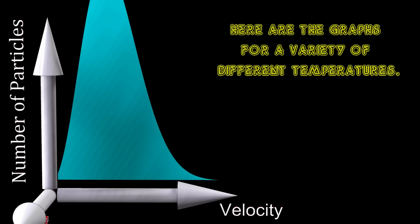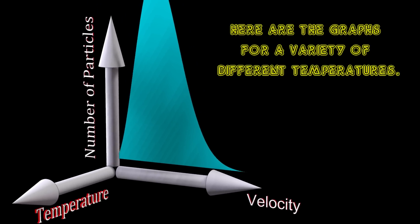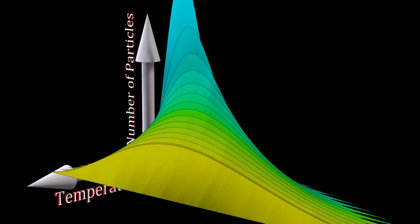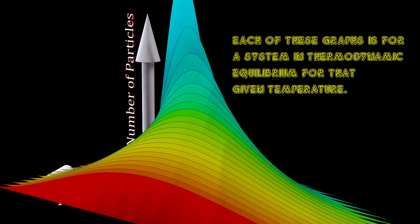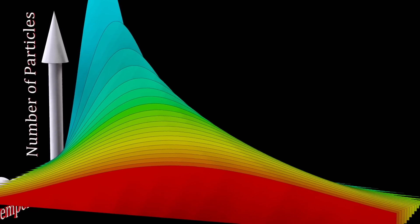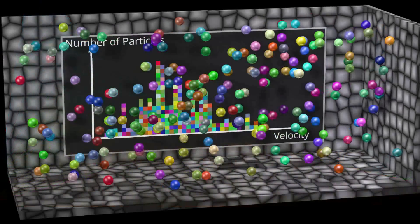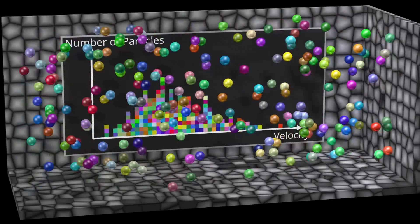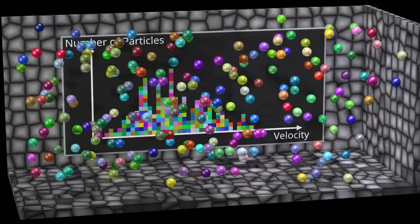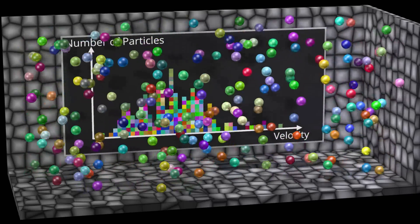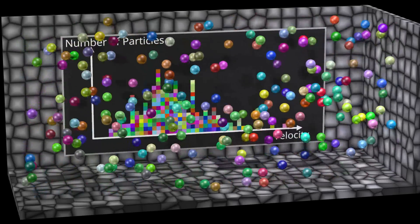Here are the graphs for a variety of different temperatures. Each of these graphs is for a system in thermodynamic equilibrium for that given temperature. A system is in thermodynamic equilibrium when the entropy of the system has reached its maximum possible value, given the constraints of the system. Entropy is a measure of how many different ways something can occur. Each of the different ways something can occur is what we call a microstate.